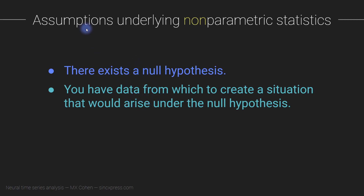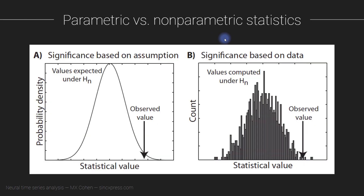It is important to think about these two considerations even if they are not actual formal assumptions underlying non-parametric and permutation-based testing. With that discussion out of the way, how to create a null hypothesis distribution based on permutation testing is covered in the next video, so keep watching.